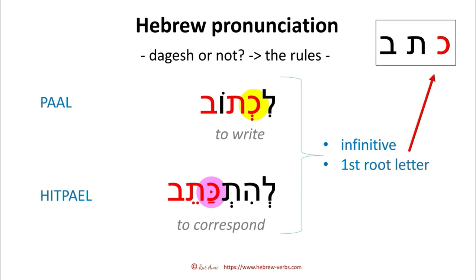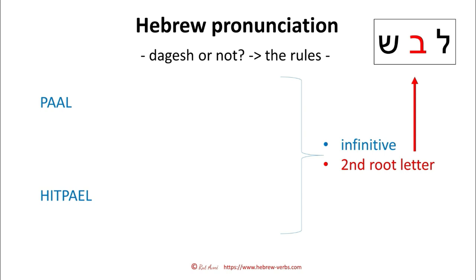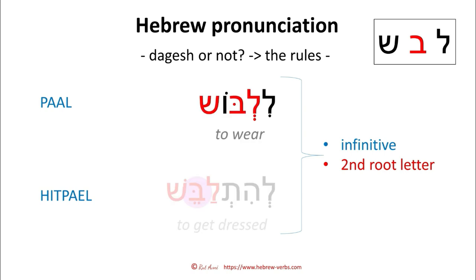Hitpael does put a dagesh — this is already one of the rules. This is what I mean when I say it goes by binyan: Paal reacts differently to a dagesh challenge than Hitpael. Now, what happens in Paal and Hitpael when we talk about the second root letter? For example, with root lamed-bet-shin, in Paal we have 'lilbosh' — so here we do put a dagesh. And in Hitpael, 'lehitlabesh' — we also put a dagesh.